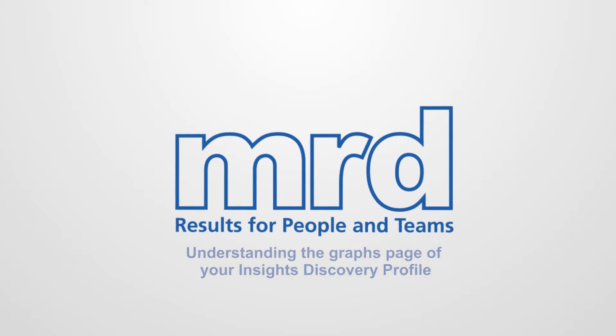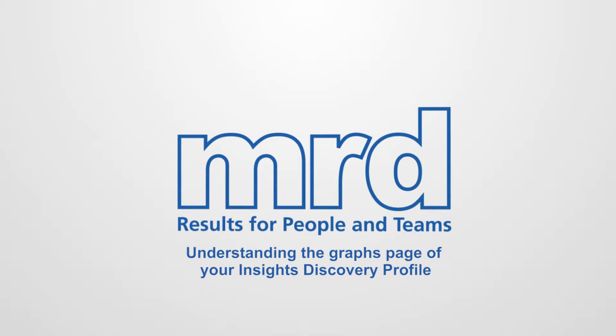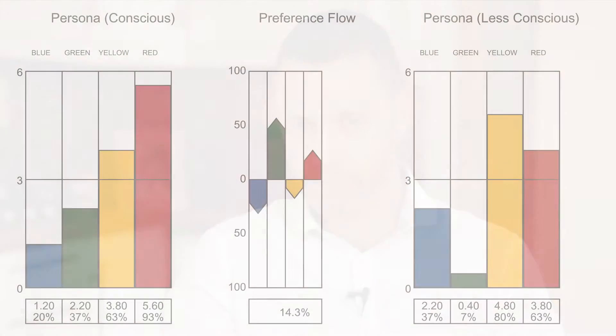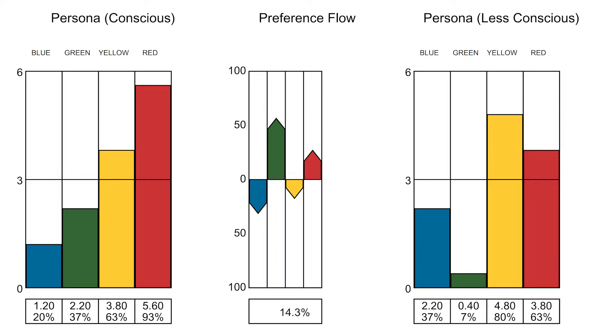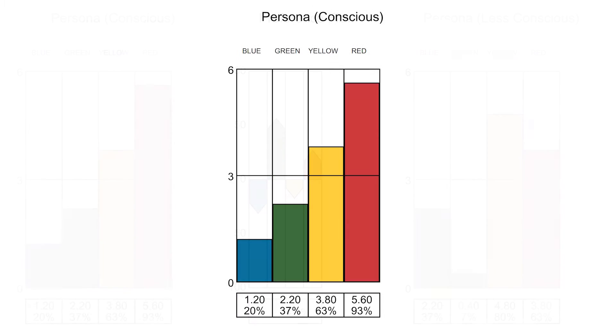The aim of this video is to help you understand the graphs page of your Insights Discovery Profile so that you can read it effectively and start working with that section of the document. You'll find your graphs page towards the back of your profile - it'll be the second to last page in the document, and the place to start is to look at the left hand chart, which is the conscious persona.